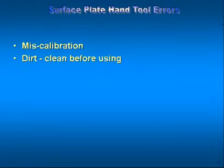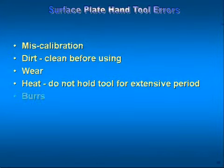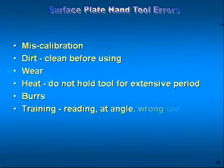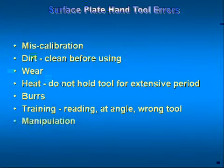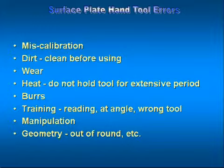Surface plate hand tool errors. There are several errors that can be made when using hand tools, such as the hand tool can be miscalibrated, it can be dirty, or it can be worn. Also, a tool can be held for an extensive period of time causing the tool to read incorrectly, and there can be burrs on the tools. Another problem that causes hand tool measurement errors is improper training, which can lead to the tool being misread or read at a wrong angle. There can be incorrect manipulation of the tool, and also a tool that is out of round.